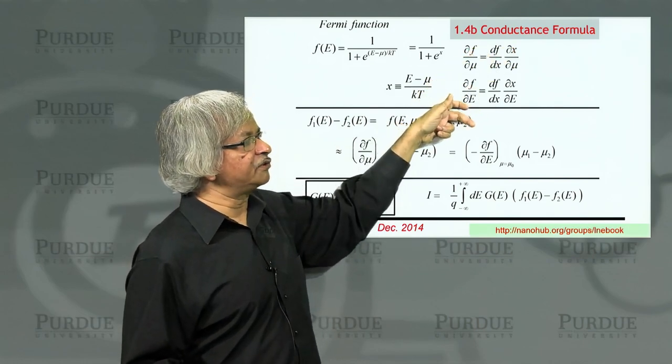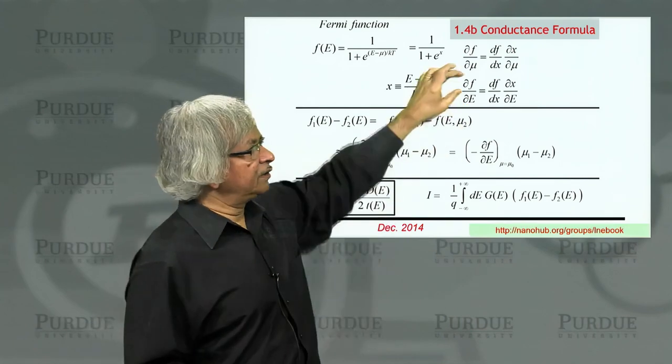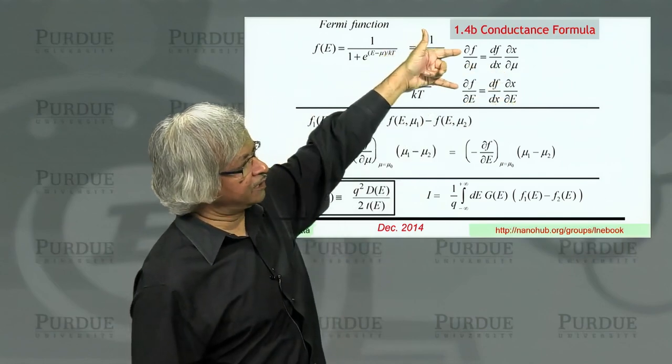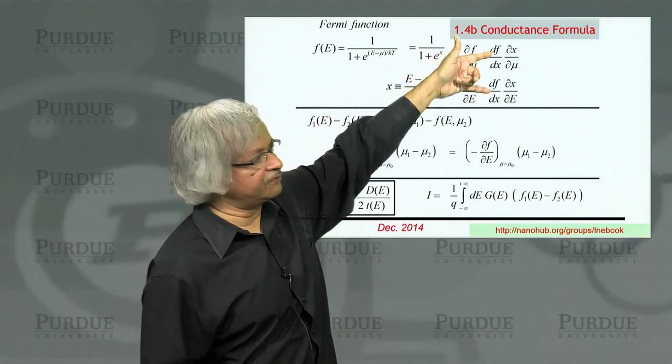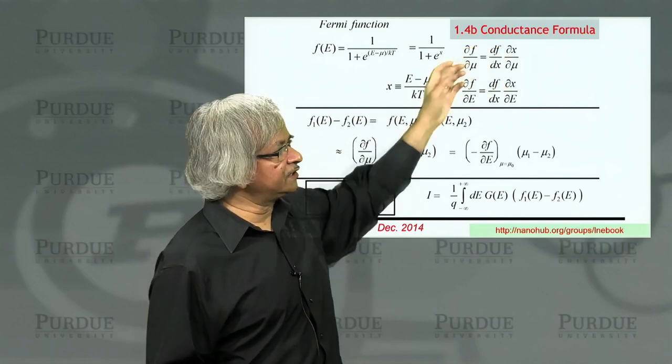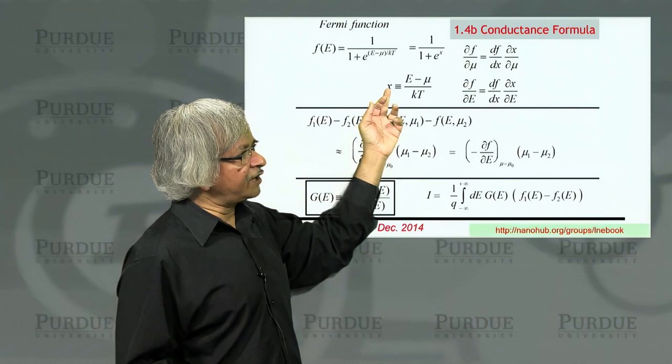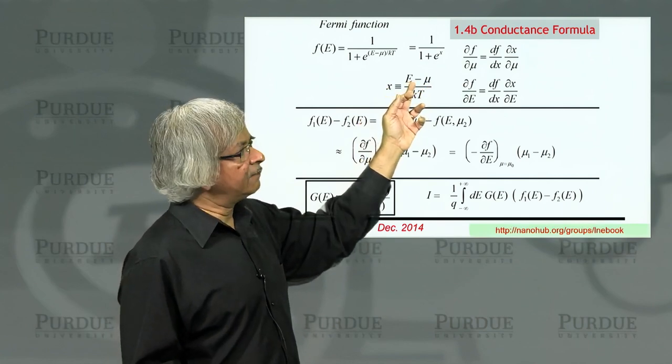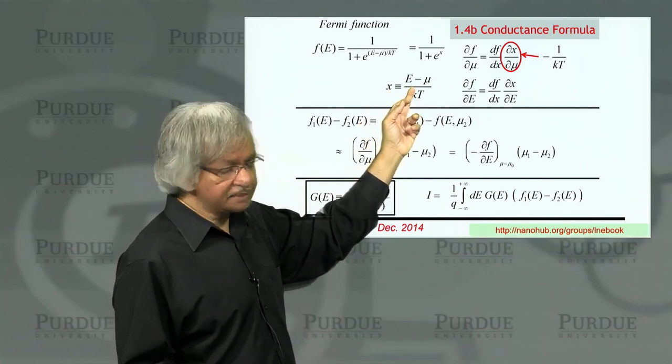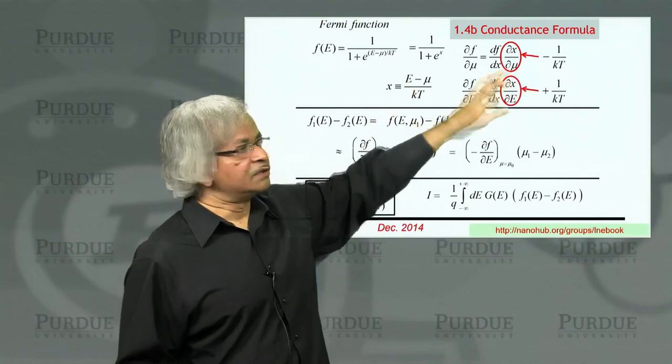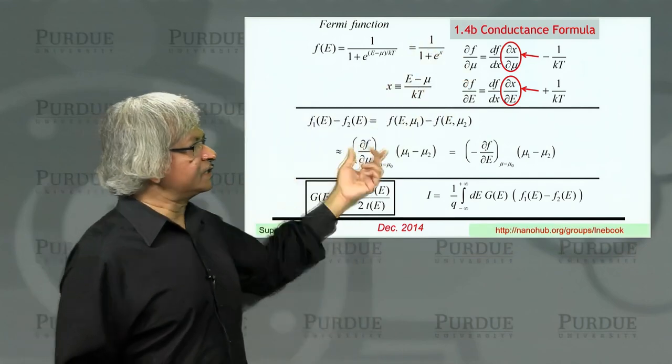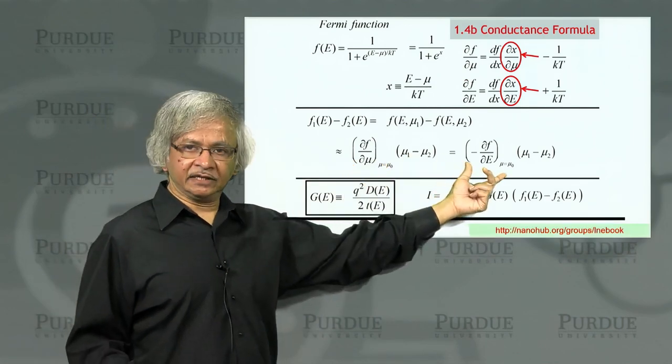Similarly, when you look at partial of F with respect to E, again the chain rule: the first step is dF/dx, but then it's partial of x with respect to E. So when you compare these two things, you can see that they both have dF/dx in the beginning. What makes them different is the second term. When you look at partial of x with respect to mu, what you get is minus 1 over kT, whereas partial of x with respect to energy is plus 1 over kT. So basically, these two partial derivatives are just negative of each other. And so, instead of del F del mu, you can write minus del F del E.